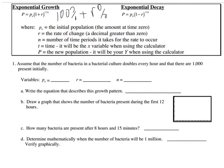If it's decay, you're starting with 100%, but it's decreasing every year. We don't have to worry about compounding here because this is annual growth. So just keep that in mind for growth and decay — how you find those rates.